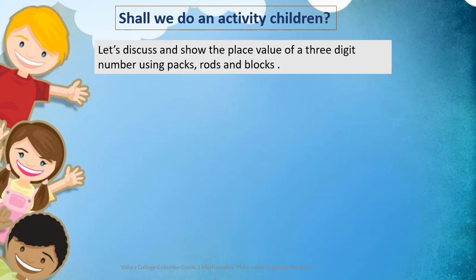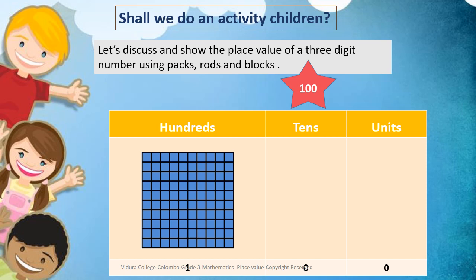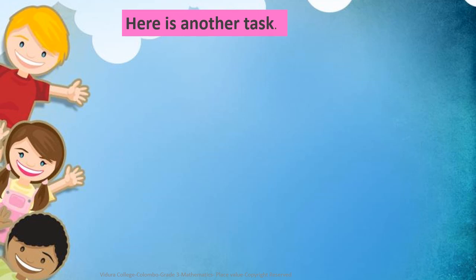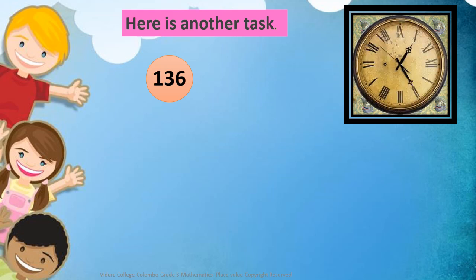The number is 100. How do we represent 100? First, we should draw a table. When we represent 100, we draw a pack under the hundreds column and leave the tens and units columns, because there are no tens and units. Here is another task: the number is 136. Let's quickly draw it in a table under hundreds, tens and units.